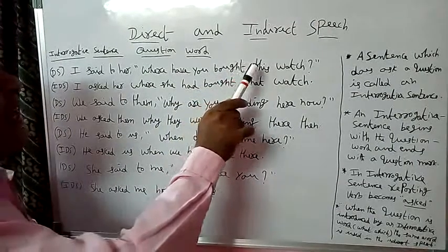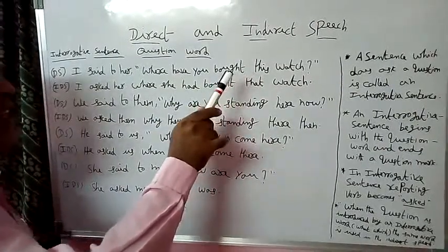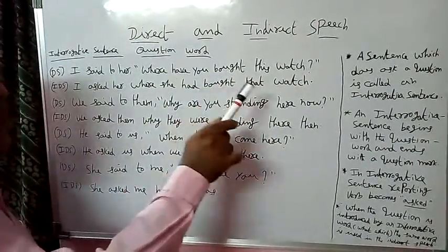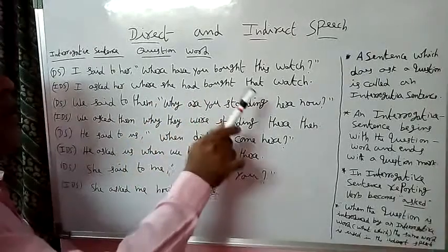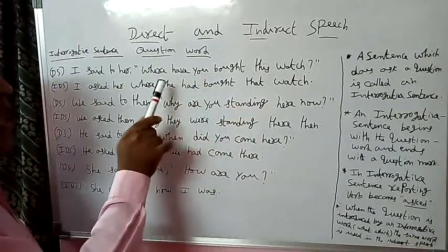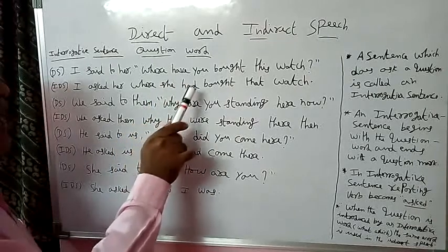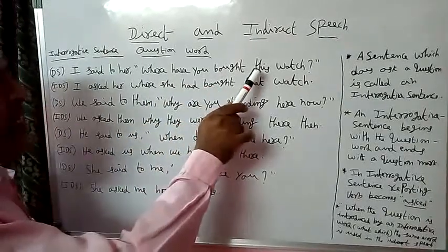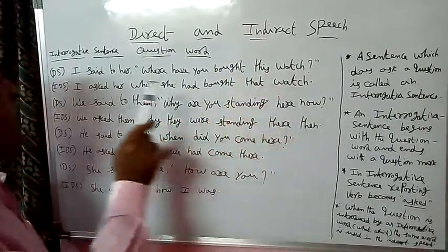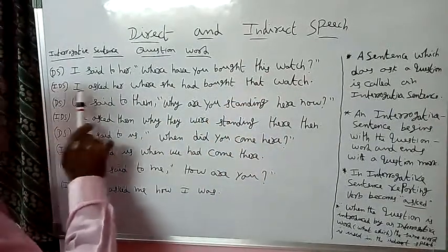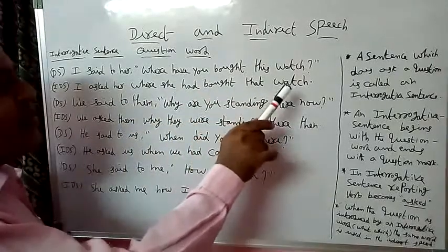This sentence is in present perfect tense, so we must change it to past perfect tense. Rule: Subject + had + verb 3 + object. 'You' is changed to 'she', and 'have bought' becomes 'had bought'. 'This' changes to 'that' in indirect speech. Answer: I asked her where she had bought that watch.